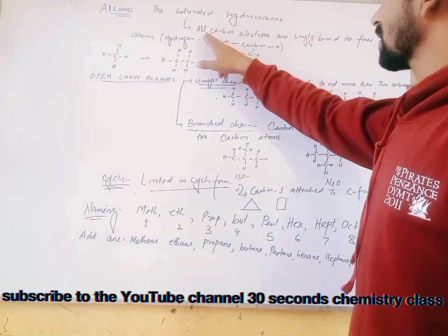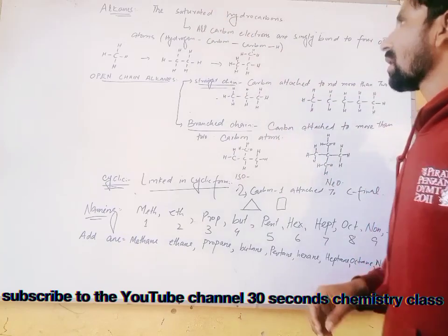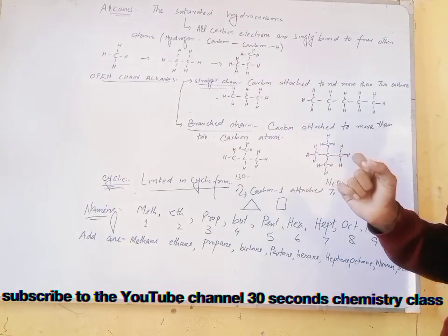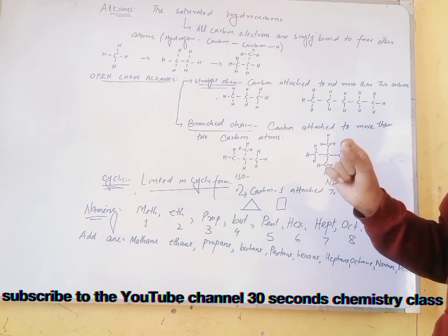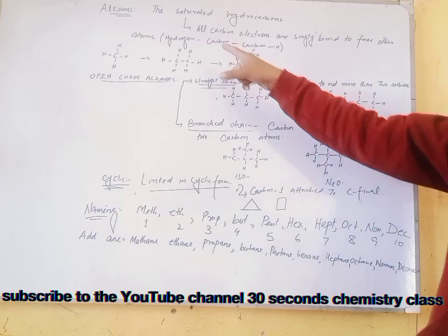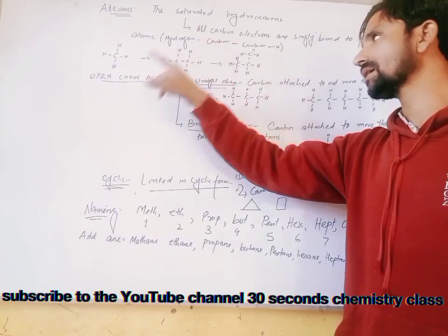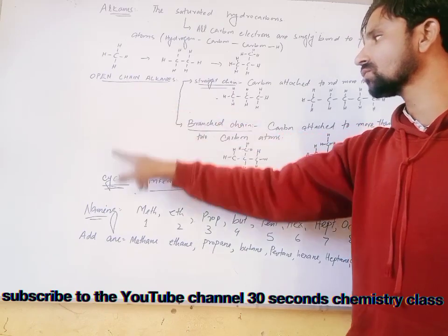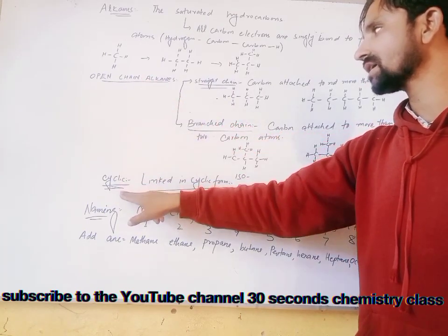Alkanes, the saturated hydrocarbons. What are saturated? In this, carbon will always be bonded single-bondedly with four other atoms. Those four atoms may be hydrogen or carbon, none other than them. There are two types of alkanes: open chain and cyclic.